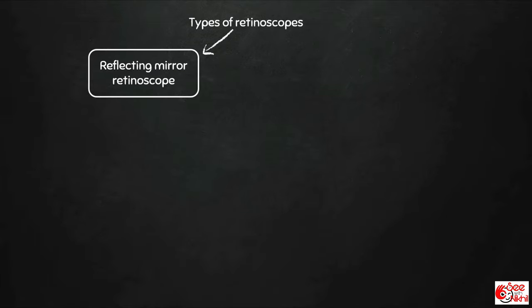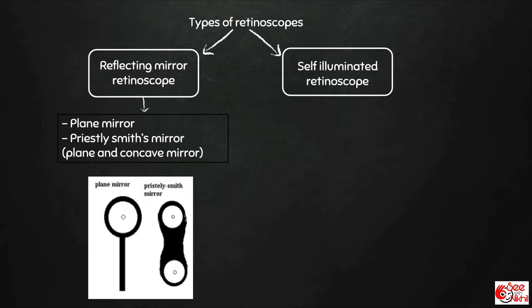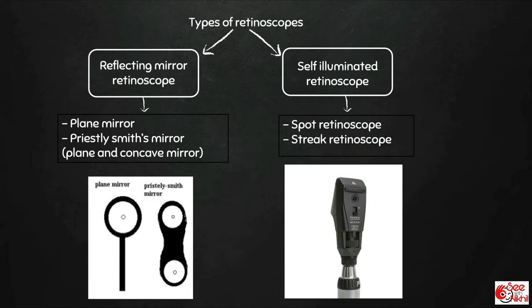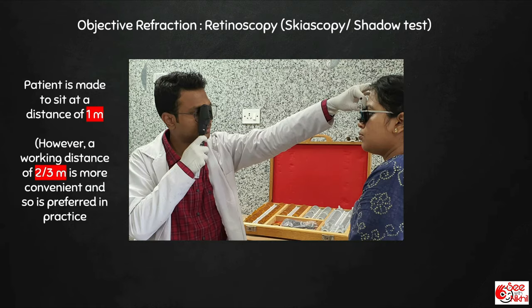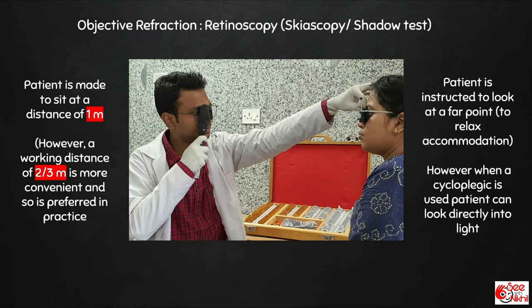Retinoscopy is done with the help of a retinoscope, which may be a reflecting mirror retinoscope like a plane mirror or Keeler-Smith, or a self-illuminated retinoscope like a spot or streak retinoscope. The patient is made to sit at a distance of one meter; however, in practice a working distance of arm's length — two-thirds of a meter — is preferred as it is more convenient and the examiner can easily hold the lenses in his left hand. The patient is asked to look at a far point to relax accommodation; however, when a cycloplegic is used, the patient can look directly into the light.